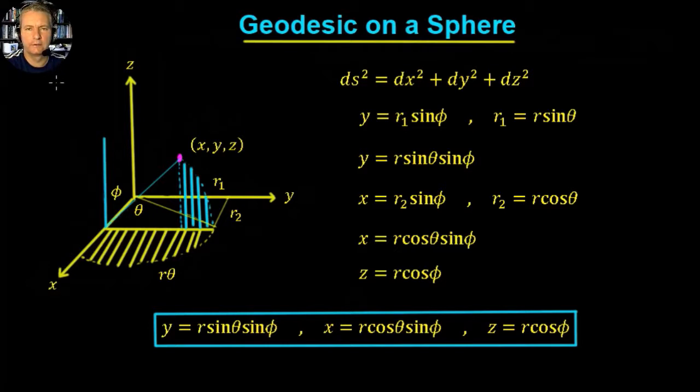Let's look at the geodesic on a sphere. The geodesic is the shortest distance between two points on the surface of a sphere.